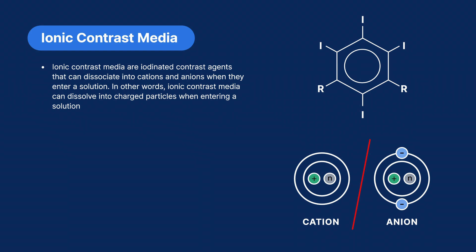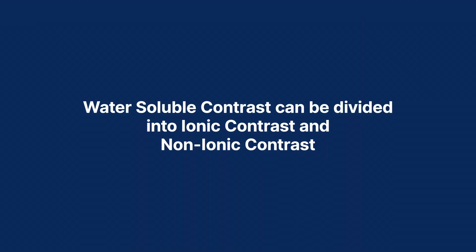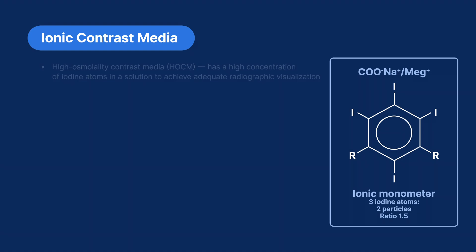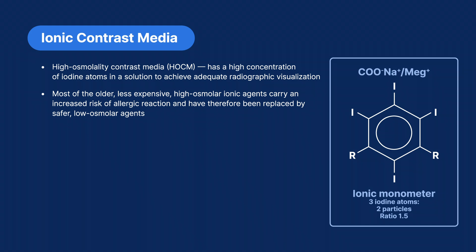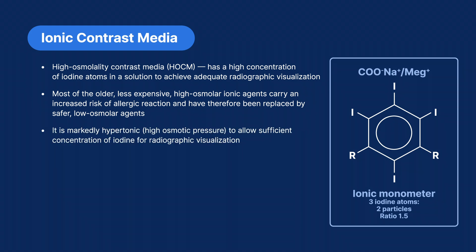Ionic contrast media are iodinated contrast agents that can dissociate into cations and anions when they enter a solution — in other words, they dissolve into charged particles. Water-soluble contrast can be divided into ionic and non-ionic contrast. Ionic contrast media is a high osmolality contrast media, meaning it has a high concentration of iodine atoms in solution to achieve adequate radiographic visualization. Most older, less expensive high osmolar ionic agents carry an increased risk of allergic reaction and have been replaced by safer, low osmolar agents. It is markedly hypertonic, meaning it has a high osmotic pressure, which allows sufficient concentration of iodine for radiographic visualization.